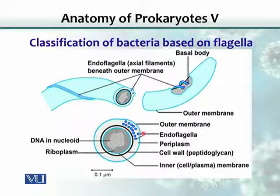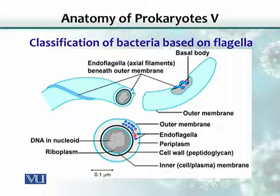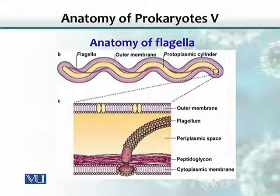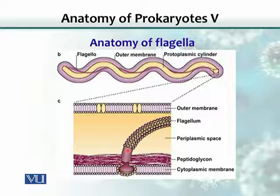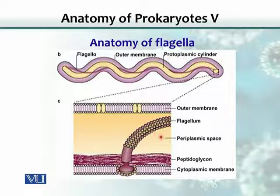In another view, the outer membrane and cell wall are visible, with the inner membrane shown as a blue line. The endoflagella are grouped together between these layers, and when combined into one group, they are called an axial filament. Each endoflagellum has a basal body embedded in the inner membrane, and the filament protrudes out of the peptidoglycan layer but remains covered by the outer membrane, staying within the periplasmic space.